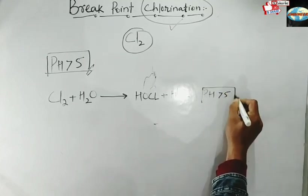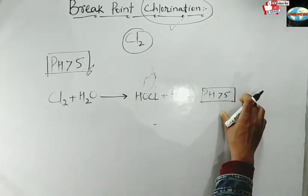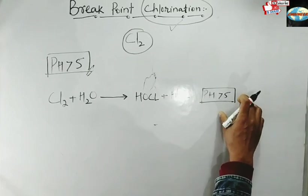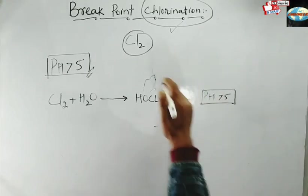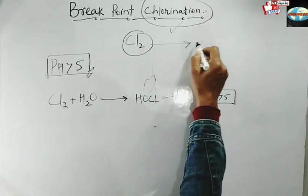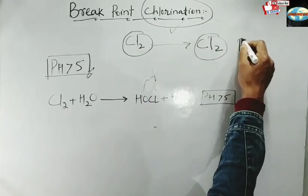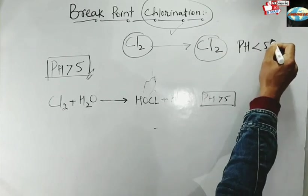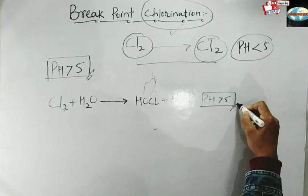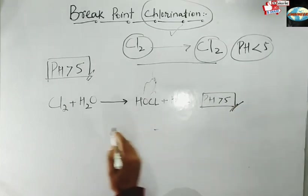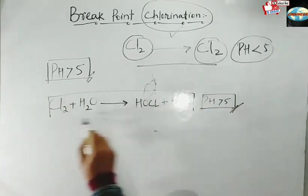Generally below pH 5, if you add chlorine, the chlorine will simply remain as Cl₂. But when you have pH greater than 5, the reaction to form hypochlorous acid and hydrochloric acid will occur.